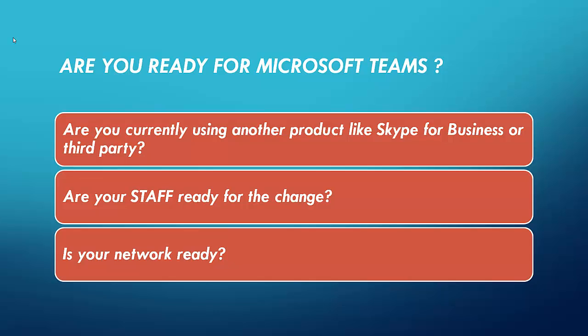Starting with Skype for Business, I would say rather do a gradual migration to Teams. There are about five options you can choose. If you go to the Teams admin portal under organizational-wide settings, you'll find an upgrade section with a dropdown list of about five migration options. My personal favorite is the one called Islands, which means you're using Skype for Business to its full extent and Teams to its full extent, both parallel to one another — full functionality on both at the same time.